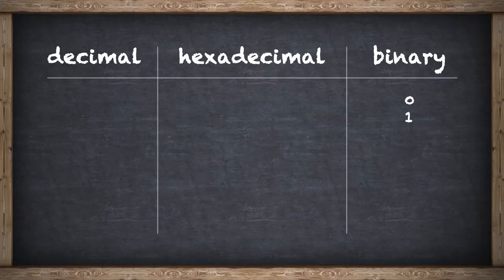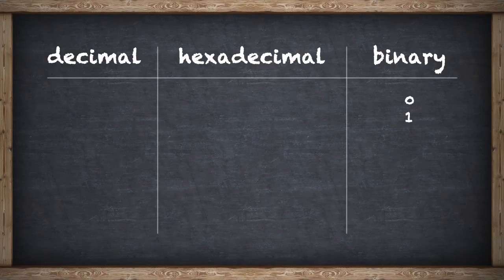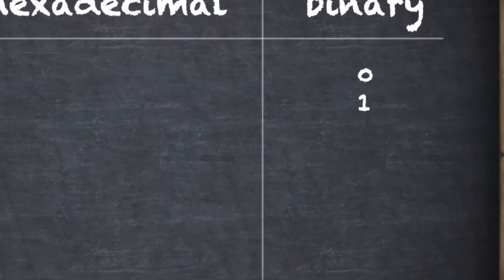Consider it like a light switch. When the light is off, binary is 0. The room is dark. And when the light is on, binary equals 1. The room is now illuminated.